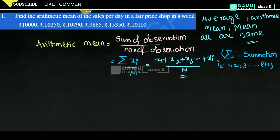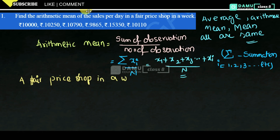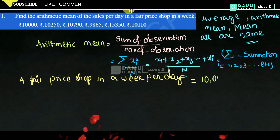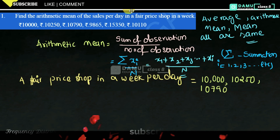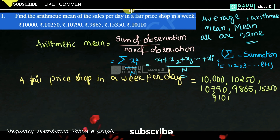Let's start our problem. Find the arithmetic mean of sales per day in a fair price shop in a week. So the observations given are: 10,000; 10,250; 10,790; 9,865; 15,350; and 10,110.